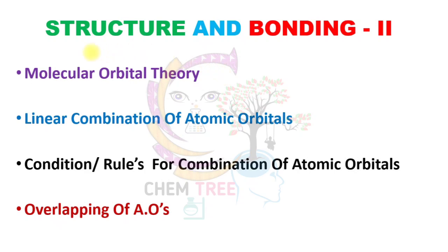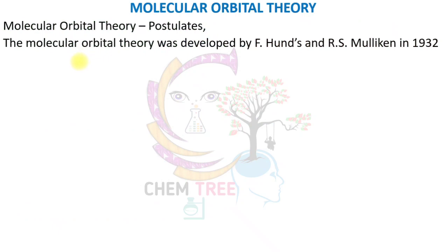Hello everyone. Under structure and bonding, I'm going to discuss molecular orbital theory. We know that valence bond theory fails to explain the paramagnetism of oxygen molecule, and it also fails to explain the structure and shape of all types of molecules. To overcome this, in 1932, F. Hund and R.S. Mulliken established the molecular orbital theory.